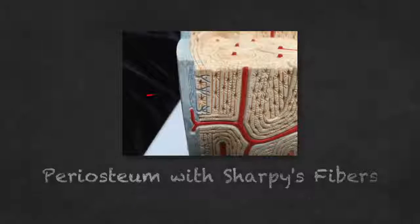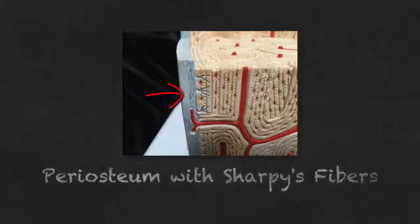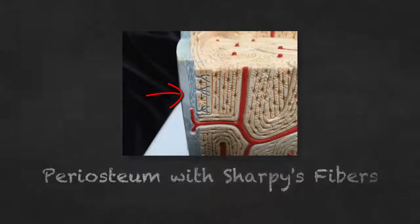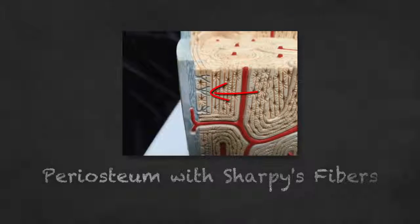Shown here in blue is the periosteum, attached to the compact bone by Sharpey's fibers, also known as perforating fibers.